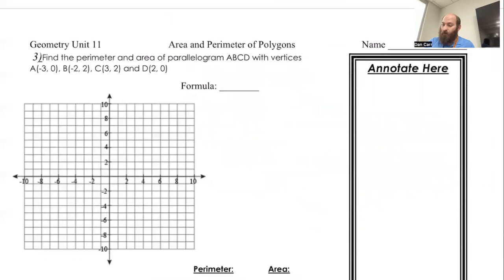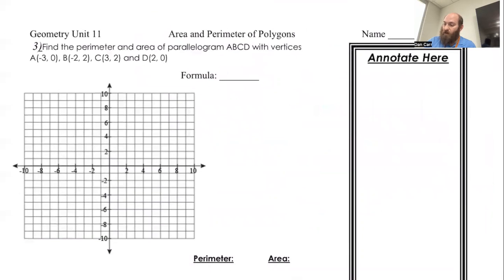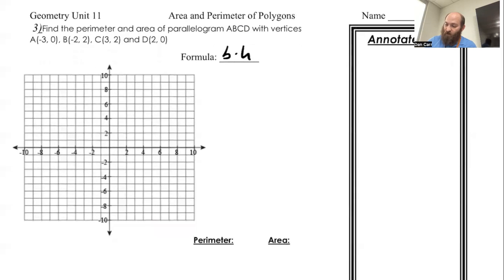Let's do one more example. We have a parallelogram. As always, it has base times height. So we'll start with plotting everything here. We've got negative 3, 0 for point A, negative 2, 2 for point B, 3, 2 for point C, and then 2, 0 for point D.